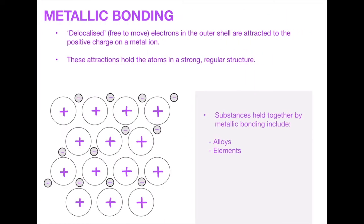The final bonding type is metallic bonding. Metallic bonding involves delocalized or free electrons in the outer shell which are attracted to the positive charge on a metal ion. These attractions hold the atoms in a strong regular structure as you can see in the diagram. The negative charge on the electrons is attracted to the positive charge on the metal ions, and this is used specifically in alloys and elements. The ionic and covalent types are a lot more in depth.